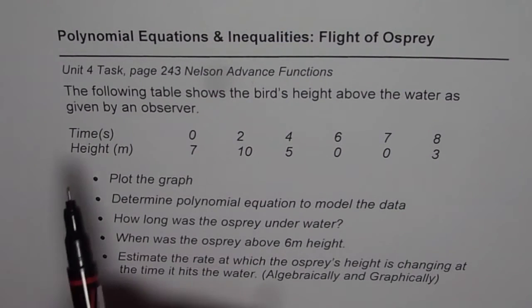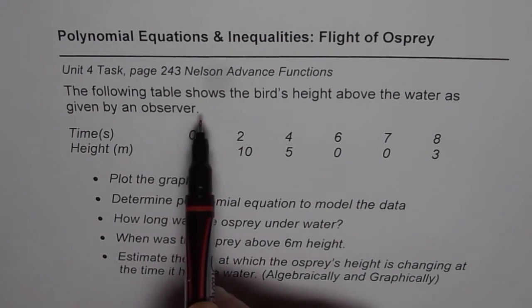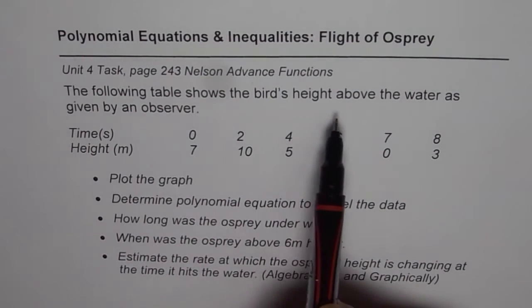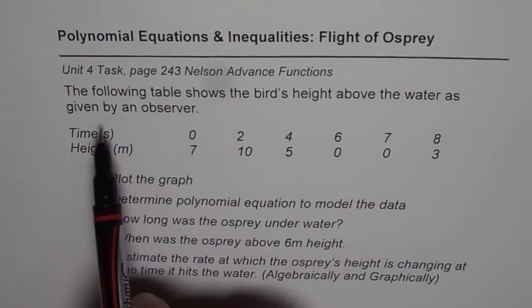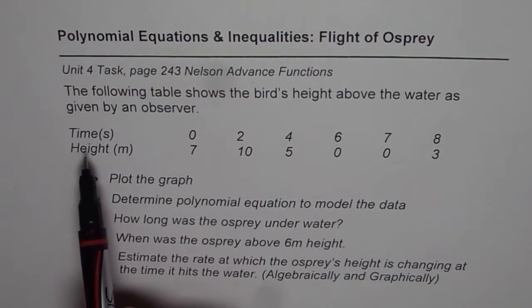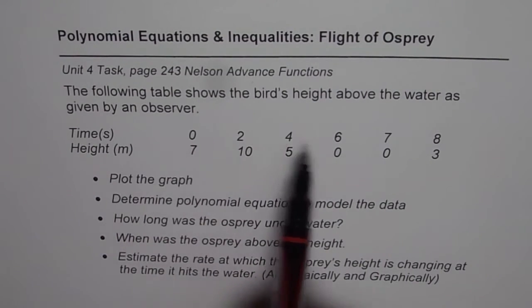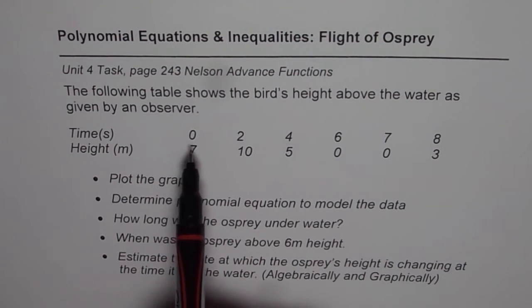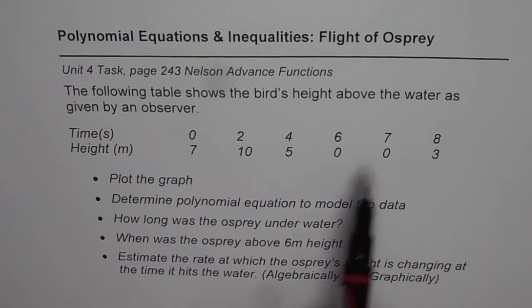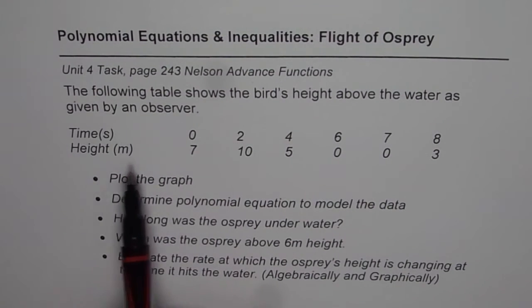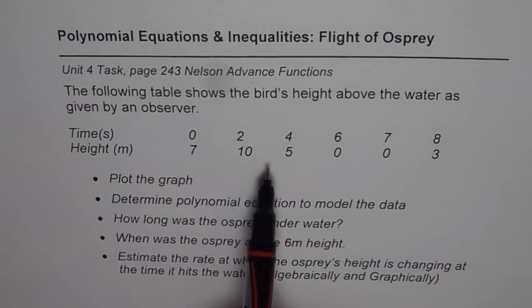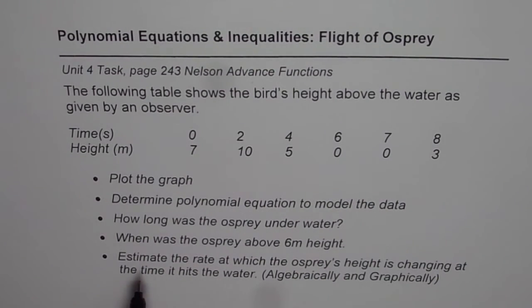The question is, the following table shows the bird's height above the water as given by an observer. The observer has given time and height: 0, 2, 4, 6, 7, 8 on the time scale and respective heights are 7, 10, 5, 0, 0 and 3. What we need to do from this data is,